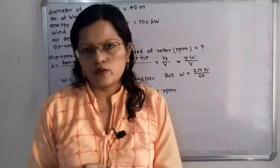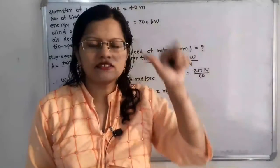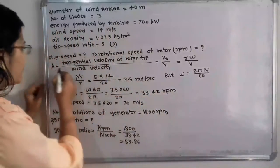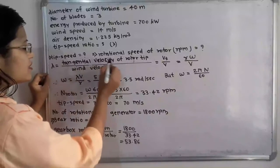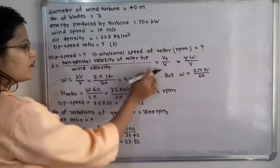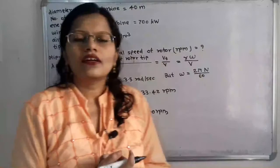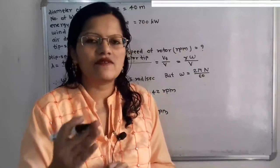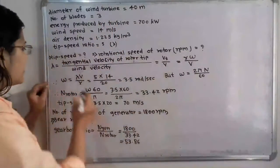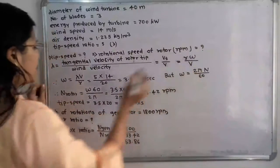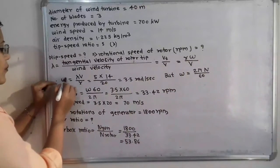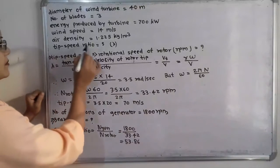Here r is the radius of the circular motion and omega is the angular velocity. So lambda equals tangential velocity of rotor tip — we call it v_t — divided by wind velocity v. Since v_t equals r omega, we write lambda equals r omega divided by v. Therefore, rearranging, omega equals lambda times v divided by r.